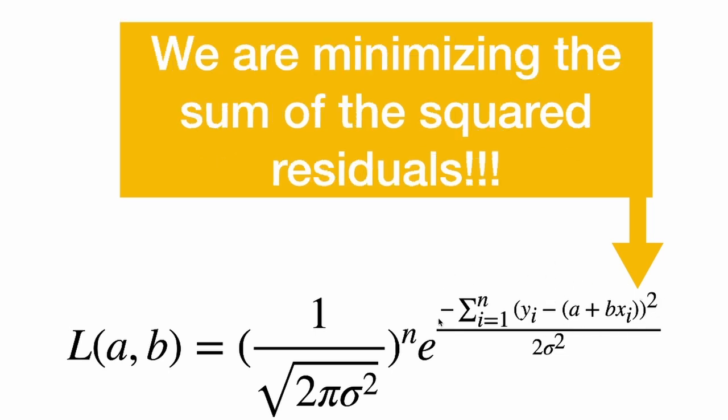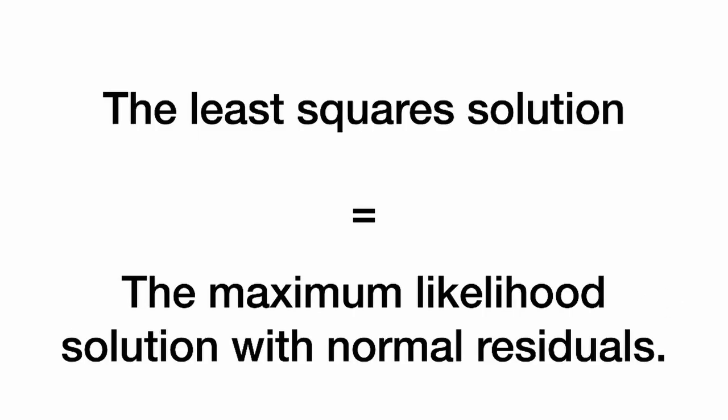So to maximize the likelihood, we are really just minimizing this exponent. We are minimizing the sum of the squared residuals. The least squares solution is the maximum likelihood solution with normal residuals.